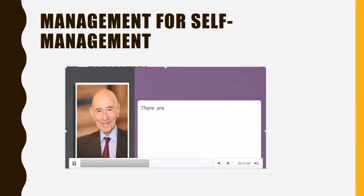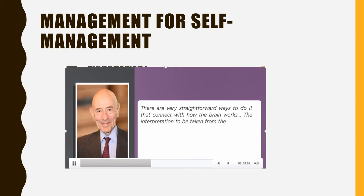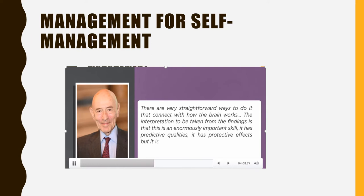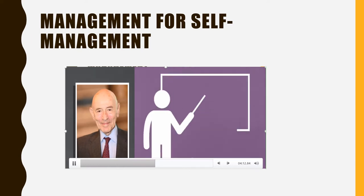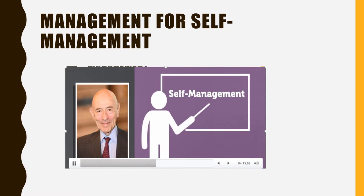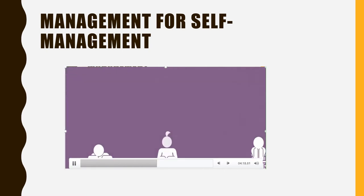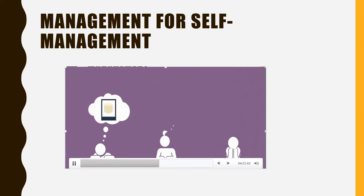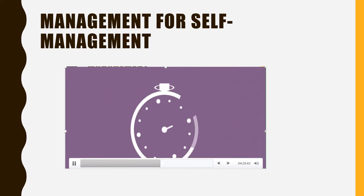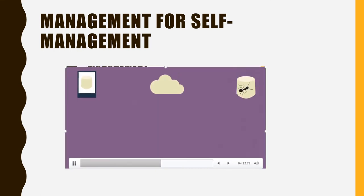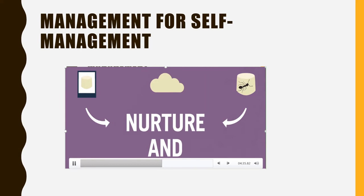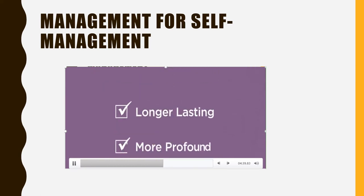The most exciting findings about the marshmallow experiments are the ease with which it is possible to change an individual's ability to delay gratification. There are very straightforward ways to do it that connect with how the brain works. This is an enormously important skill — it has predictive qualities, it has protective effects, but it is teachable, it is changeable. Mischel showed this in an experiment where researchers gave kids helpful ideas before the test, like imagining the marshmallow is actually a flat picture, or a cloud, or that there is a bug crawling on it. Suddenly, the kids could wait far longer.